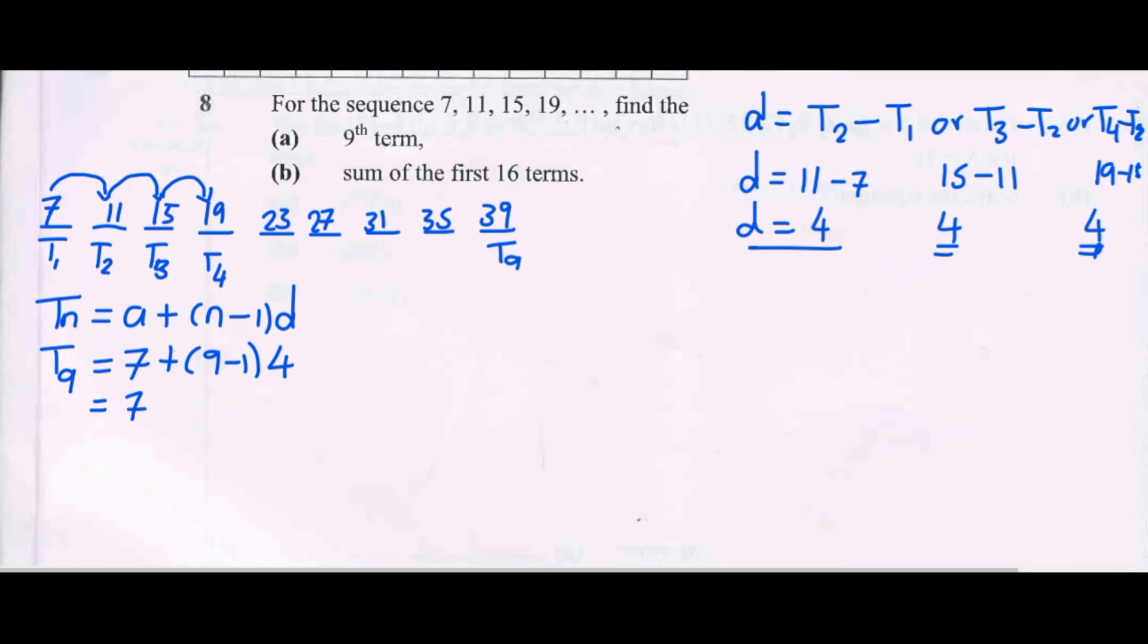So we have 7 plus, here we get 8 times 4. If you multiply 8 times 4 we get 32. If you add these two numbers you get 39 as your final answer. So we are getting the same final answer.